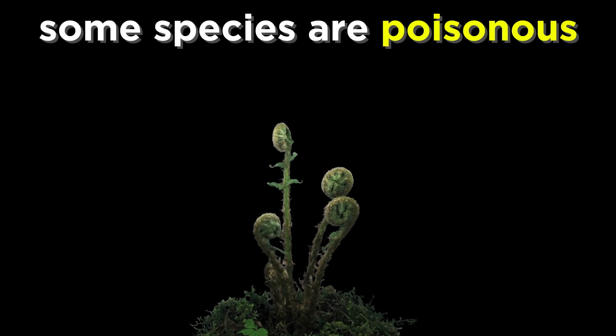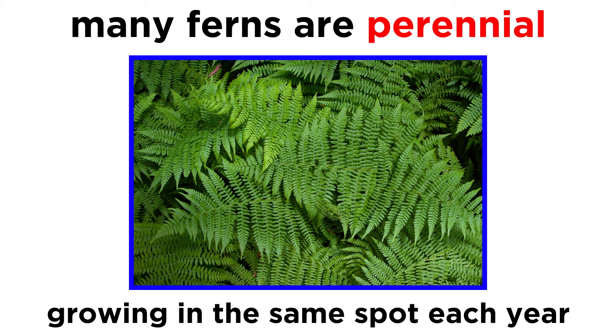The fern sporophyte generation is readily identified by the characteristic fiddlehead of its curved stem before the megaphils unfurl. Many people eat fiddleheads, but it's important to properly identify the fern species first, because some are poisonous.